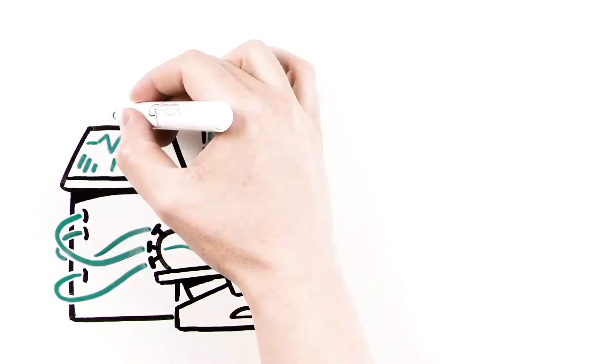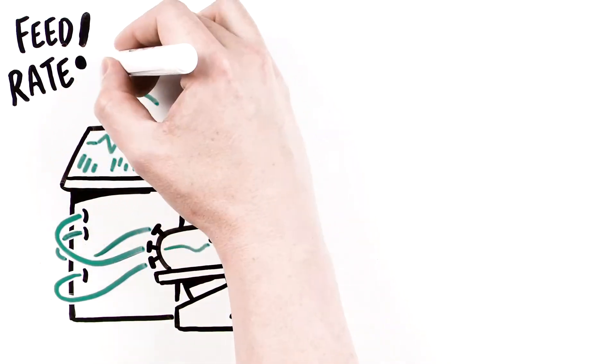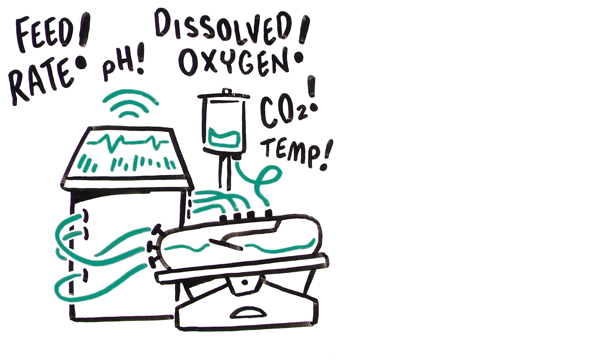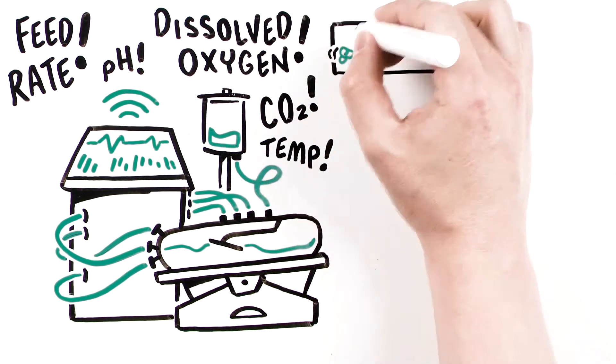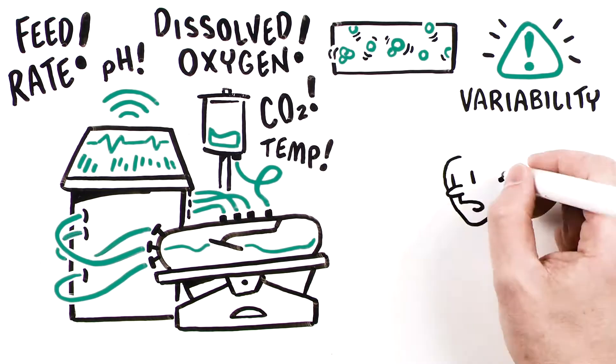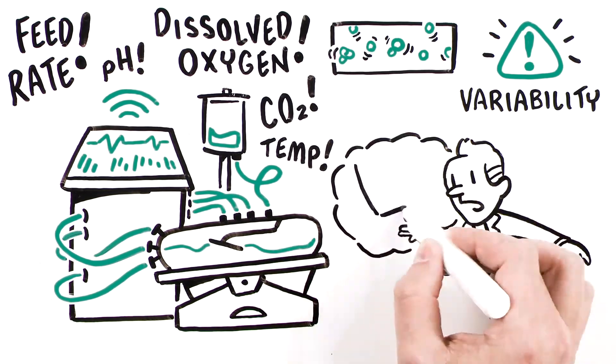Forced to control the machines, constant measurement of feed rate, pH, dissolved oxygen, CO2, and temperature is required. Overall, this level of complexity disturbs cells, adds variability, and requires expert operators throughout the process.